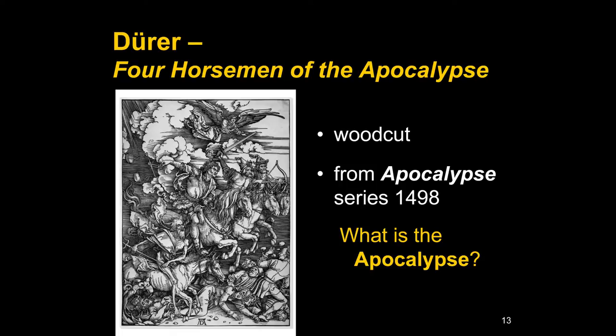Dürer was very well known for his prints — most are either woodcuts or engravings, though he also did some experimental etchings and perhaps some drypoint. His most famous woodcut is the Four Horsemen of the Apocalypse, reproduced in virtually all survey books. It's from his series of images from the Apocalypse, published in 1498.